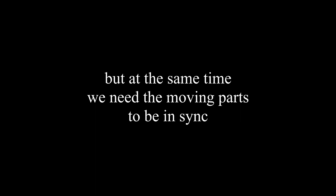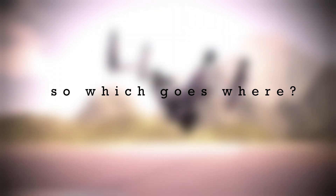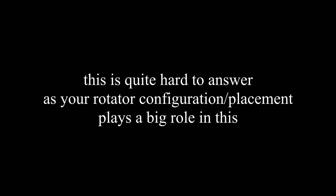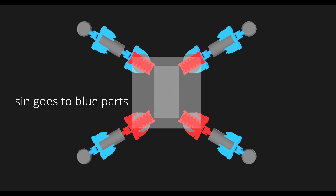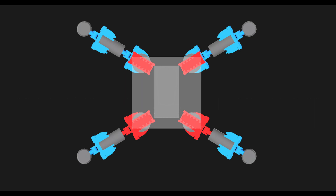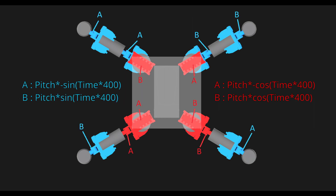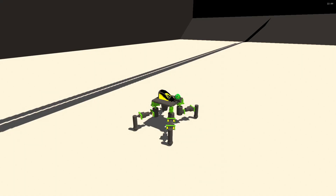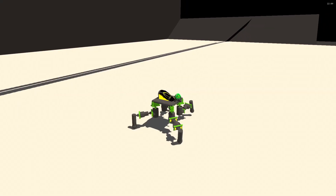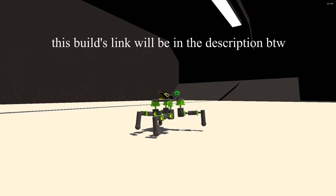This is important to know, as we need some parts to execute movement faster than other parts, but at the same time we need the moving parts to be in sync. Once you have done that, we would have a stable walking motion — better than what we had in part 1.